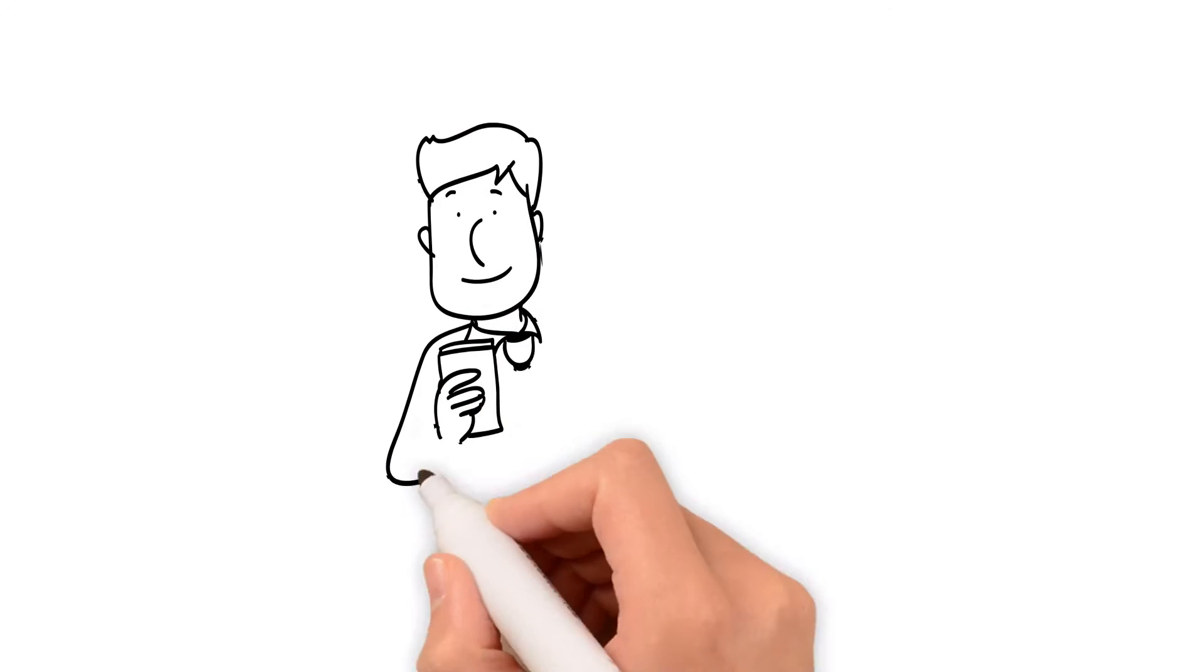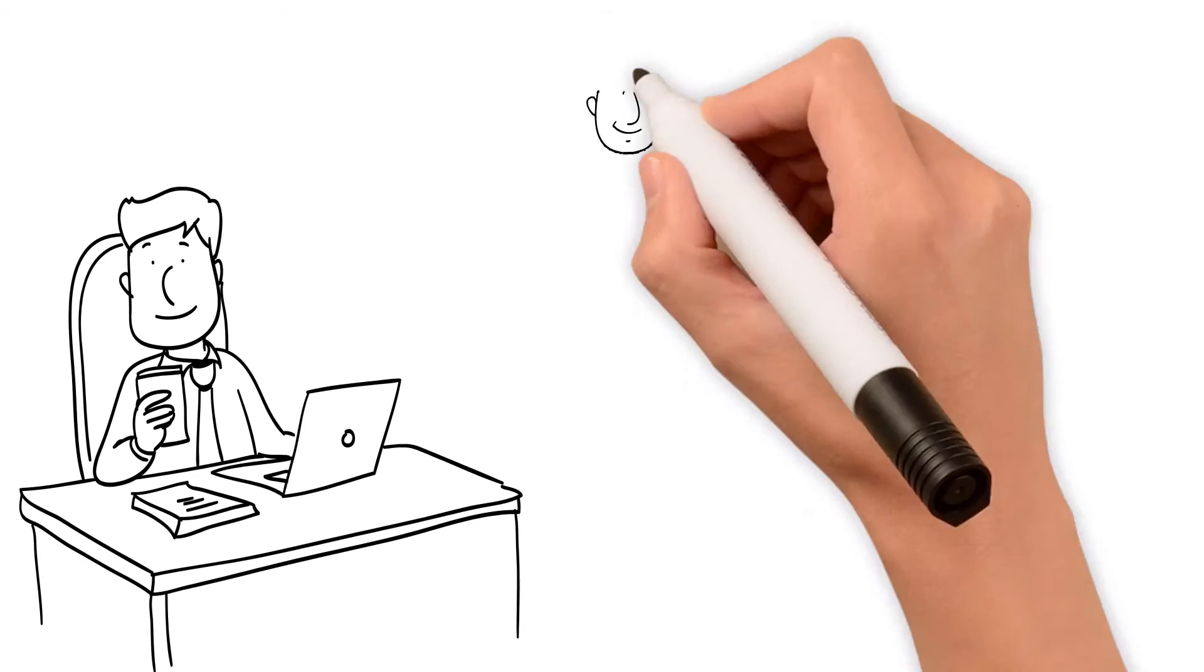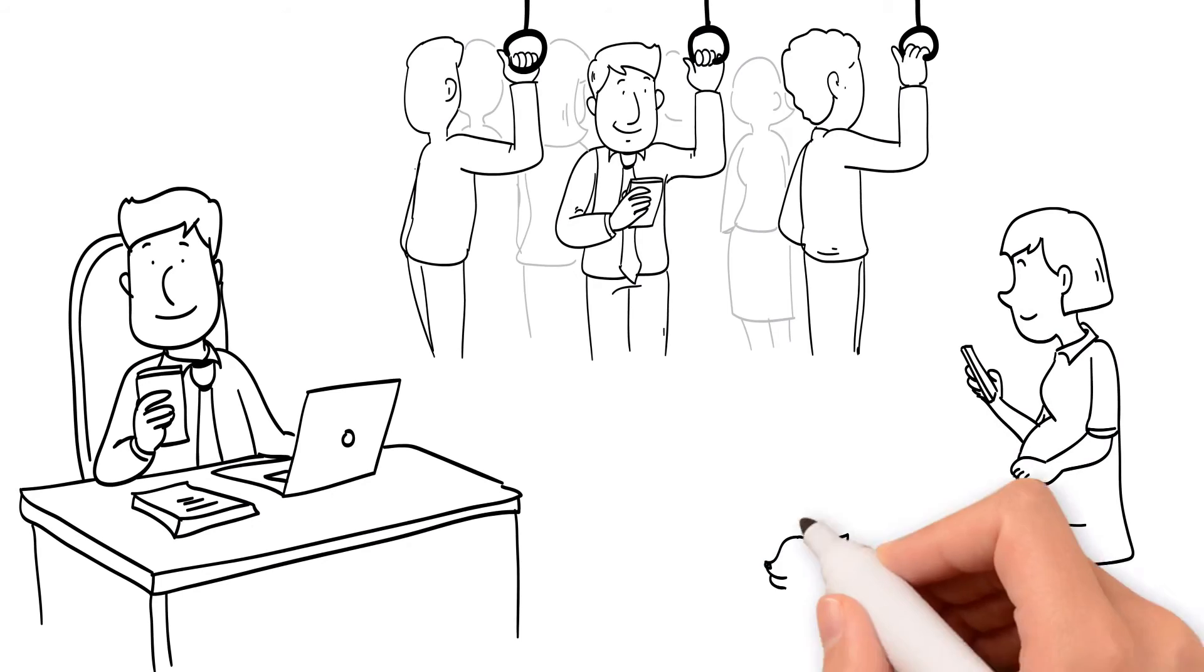This means you can both use the app independently when each of you finds the time, whether at work, on the subway, or even walking the dog.